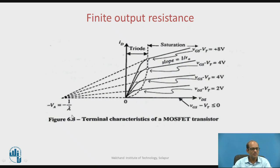Which is minus VA, and this minus VA is equal to minus 1 by lambda. This means you can obtain lambda equals 1 by VA.